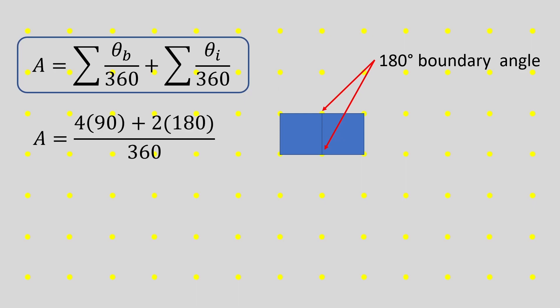We have four 90 degree angles, which I'll write as 4 times 90, and two 180 degree angles, or 2 times 180. That simplifies to 360 plus 360 over 360, which is 720 over 360, which is 2. Once again, the sum of the angles matches the area of our two squares.